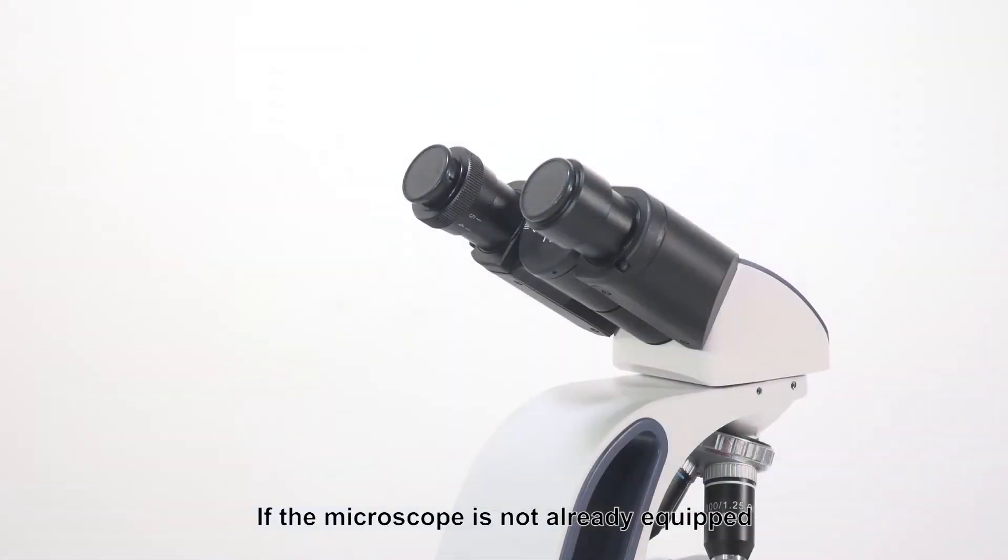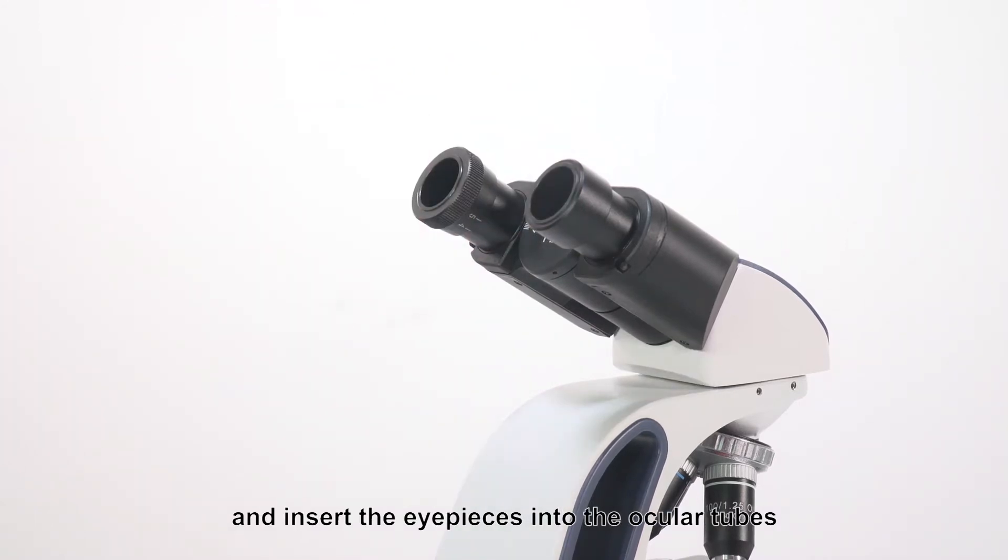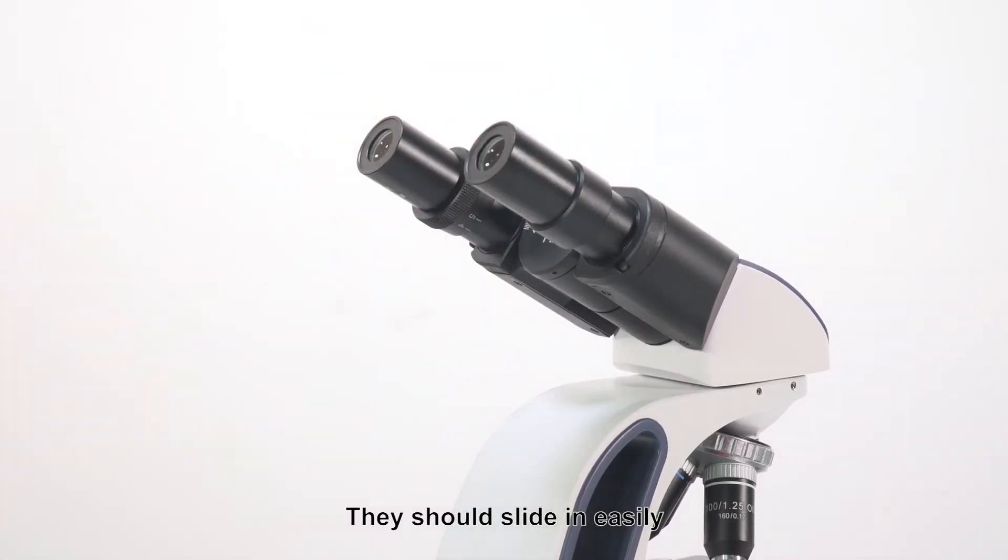If the microscope is not already equipped with eyepieces, locate the ones included in the box. Uncover the eyepiece holders on the head of the microscope and insert the eyepieces into the ocular tubes. They should slide in easily.